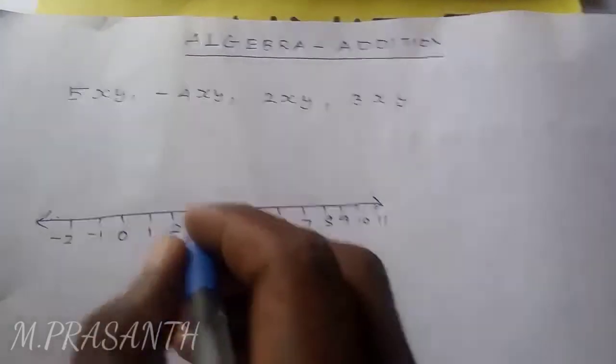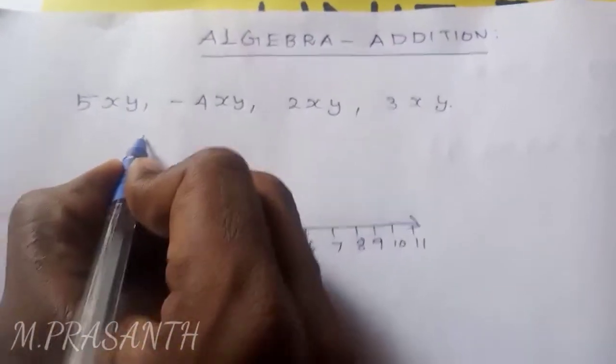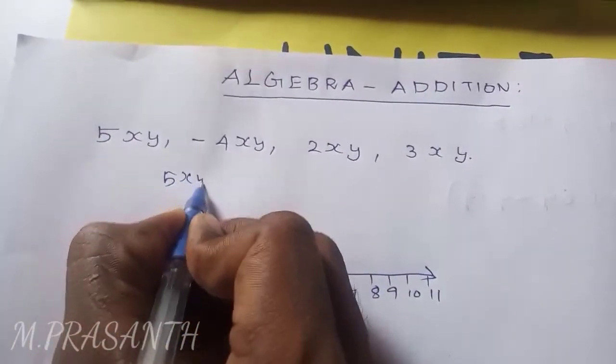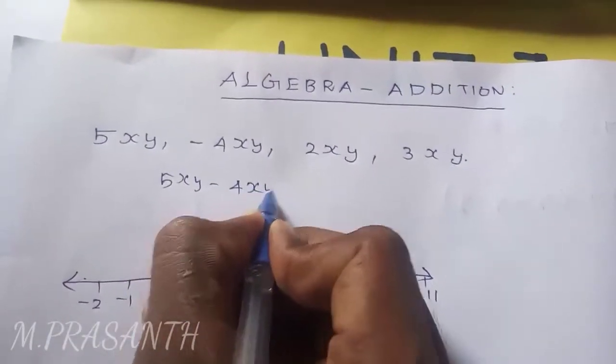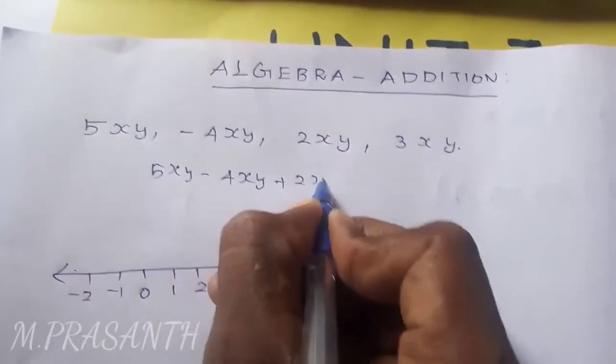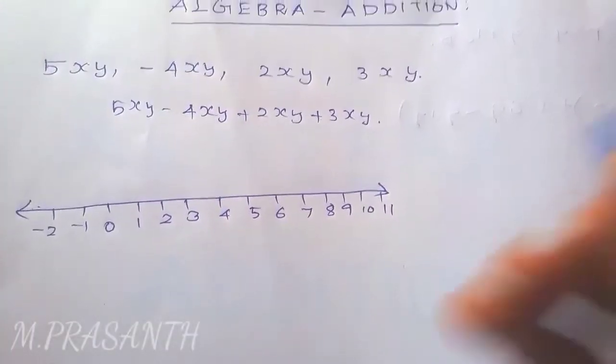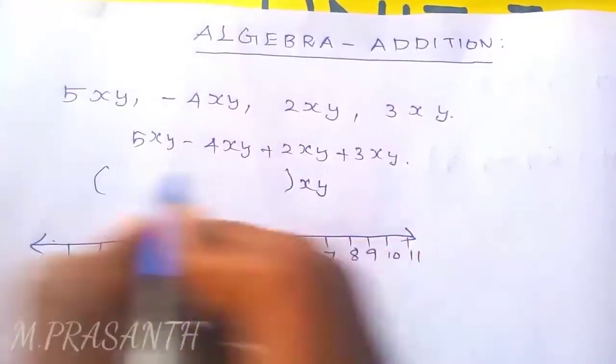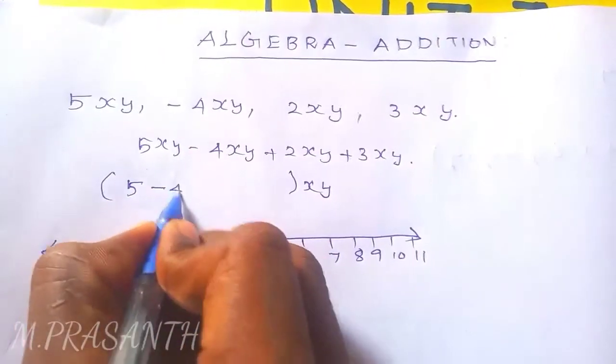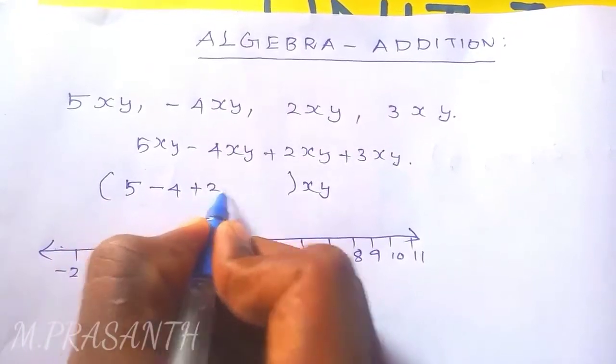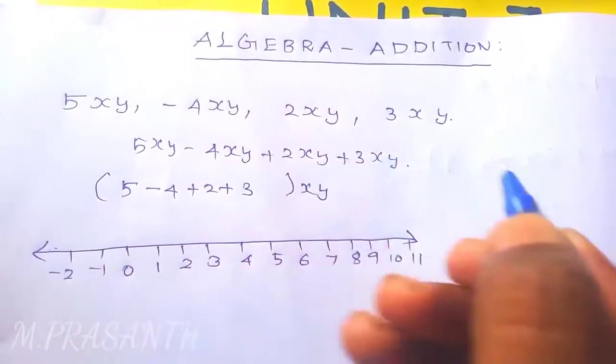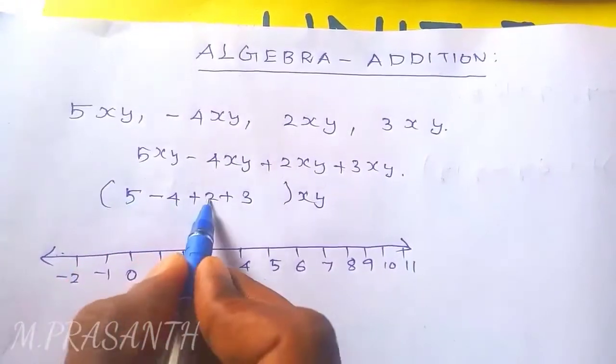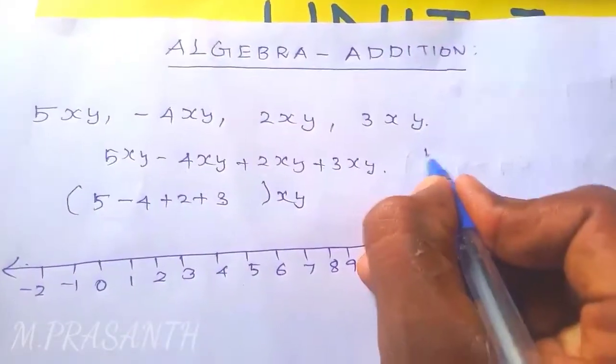So I write 5xy minus 4xy plus 2xy plus 3xy. See, all the terms are like terms, so definitely we add the terms. First we write the variable xy and separate the numbers with their plus and minus signs. Here 5 is plus, 2 is plus, and 3 is also plus.